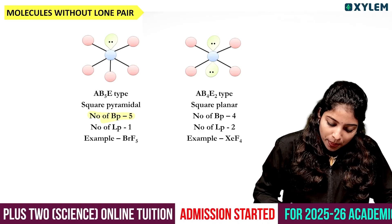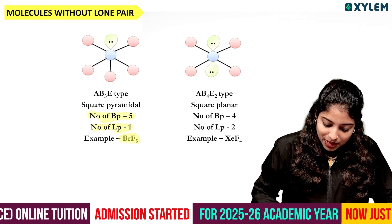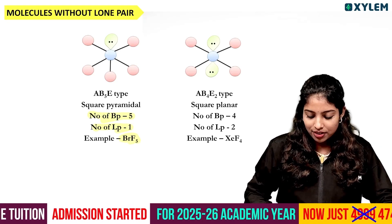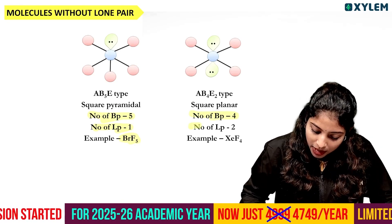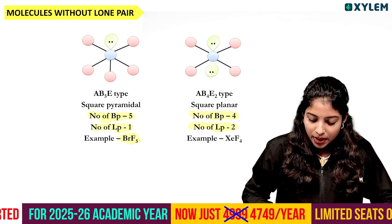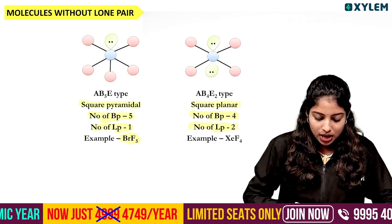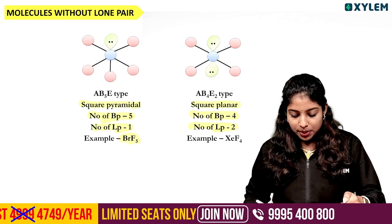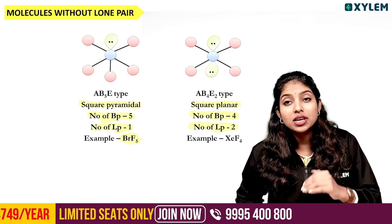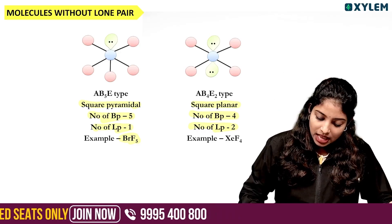With 5 bond pairs and 1 lone pair (5-1), the shape is square pyramidal. With 4 bond pairs and 2 lone pairs (4-2), the shape is square planar.